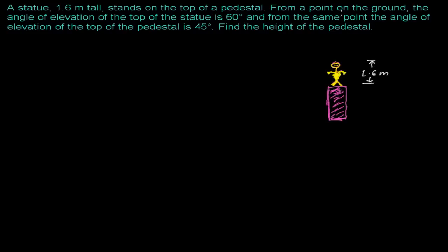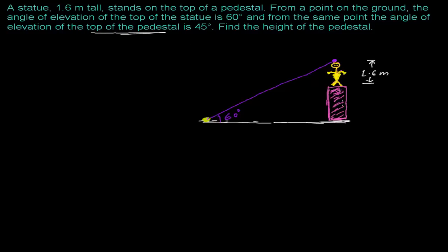On the top of the pedestal, from a point on the ground — suppose this is my ground, and this pedestal is also standing on the same ground. From a point here, the angle of elevation of the top of the statue is 60 degrees. If I am watching at the peak point, at the top of this statue, I get an angle of elevation of 60 degrees. From the same point, the angle of elevation of the top of the pedestal is 45 degrees.